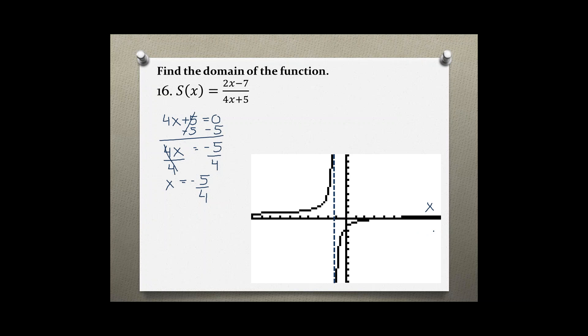Reading the graph from the left, the x values would start at negative infinity, would go all the way to this -5/4 point, and then continue to positive infinity.